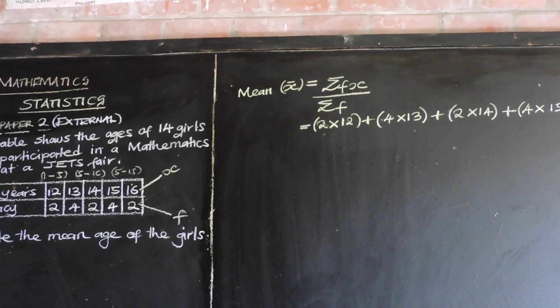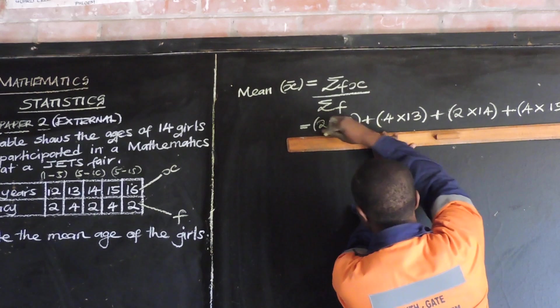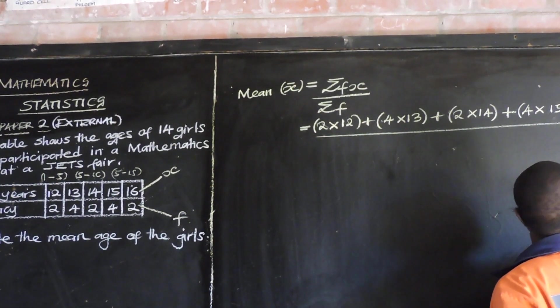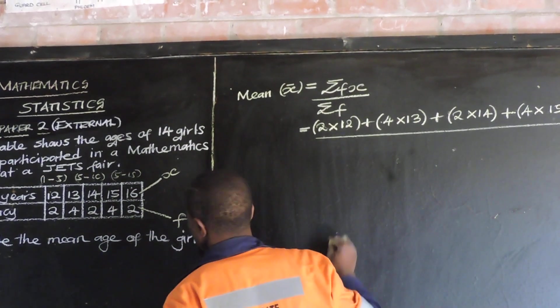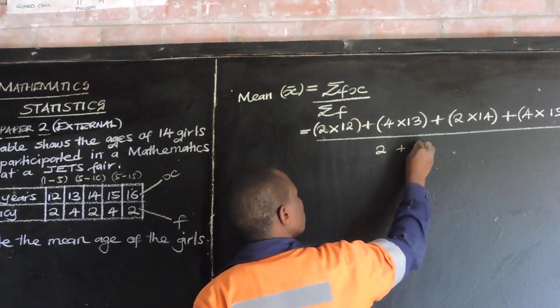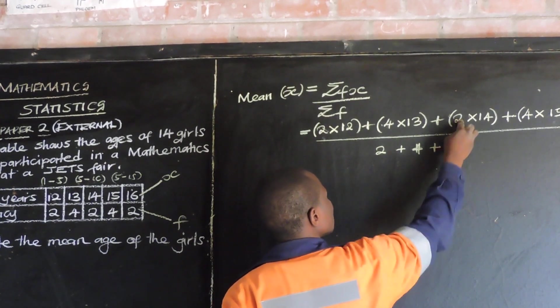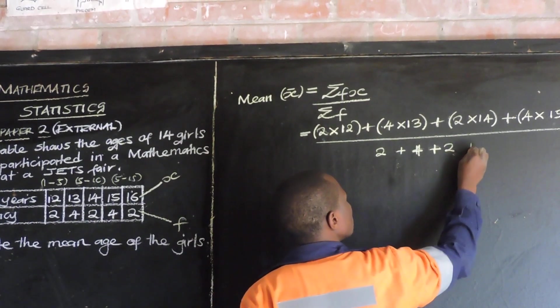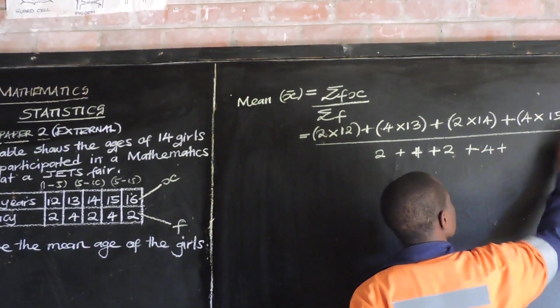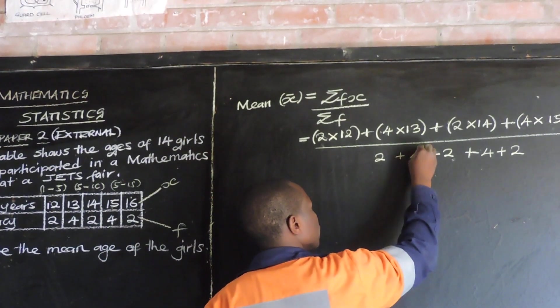Then we're going to divide, we're going to divide this by the total frequency. So how do you find the total frequency, you just add 2, plus 4, plus 2, then plus 4, plus 2. This is 4, take note, this is 4.